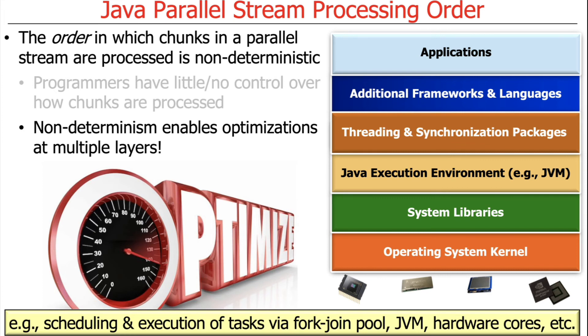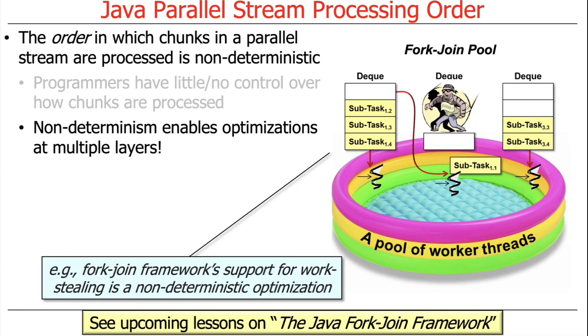That's a good example of a non-deterministic algorithm that will randomly steal work. If you run the same code over and over again, you may get different results every time based on the random number generator occurring deep in the bowels of the common fork-join pool.